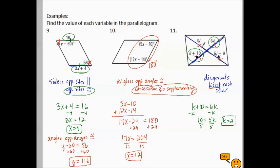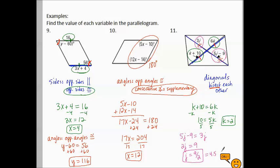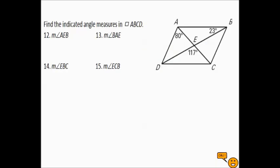Similarly, 3j and 5j − 9 are both halves of a diagonal that has been bisected. So 5j − 9 equals 3j; subtracting 3j gives 2j = 9, so j equals 9/2 or 4.5. Both answers are acceptable.